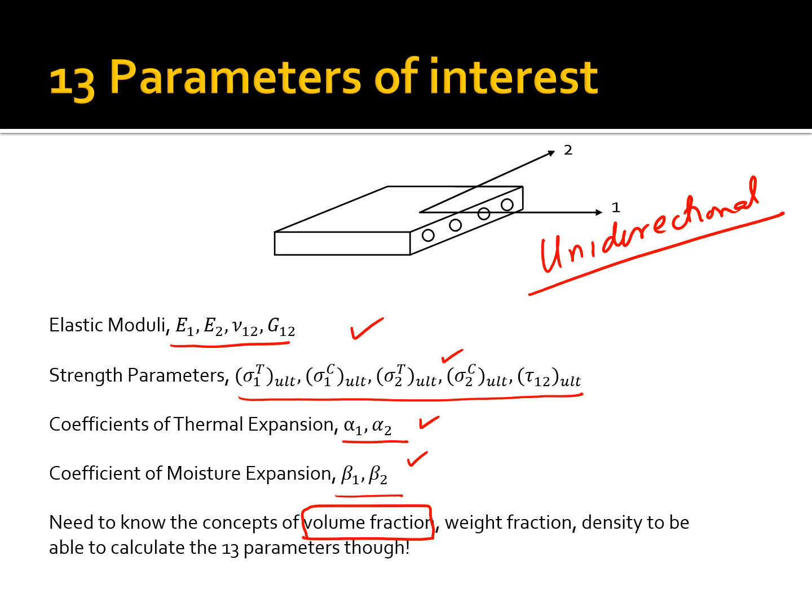What that means is: how much of the fiber is in there? How much of the matrix is in there? What is the fiber made of? What is the manufacturing process? So all of those are going to affect these 13 properties which you're seeing here.